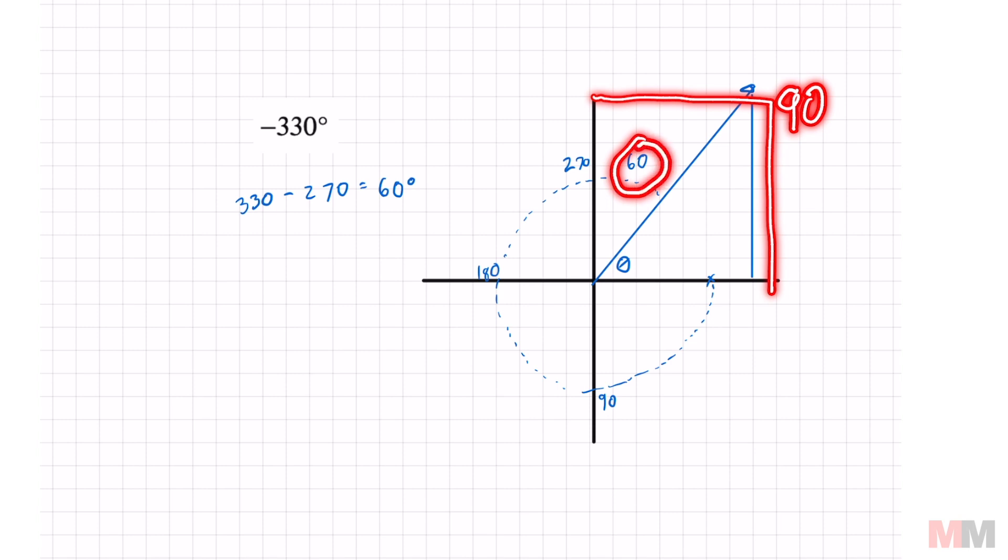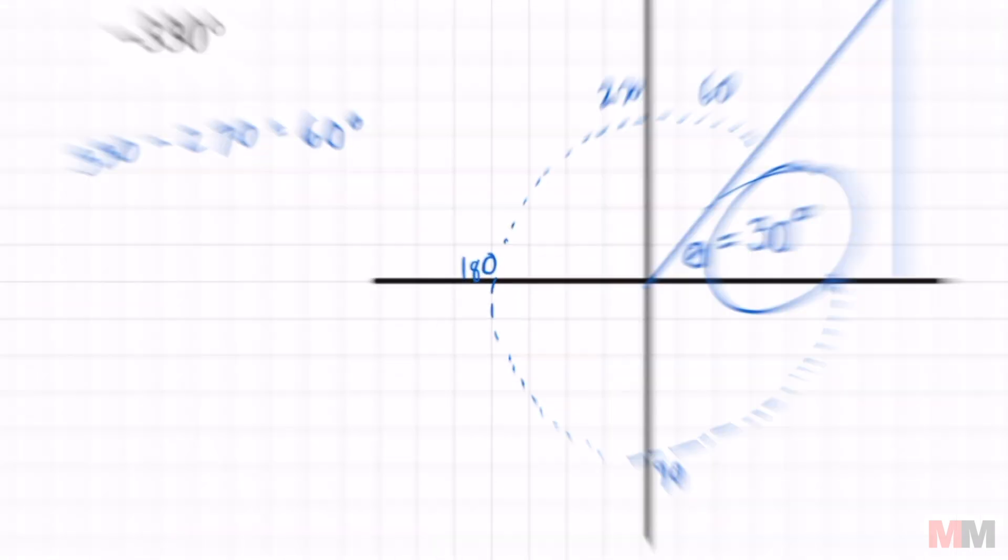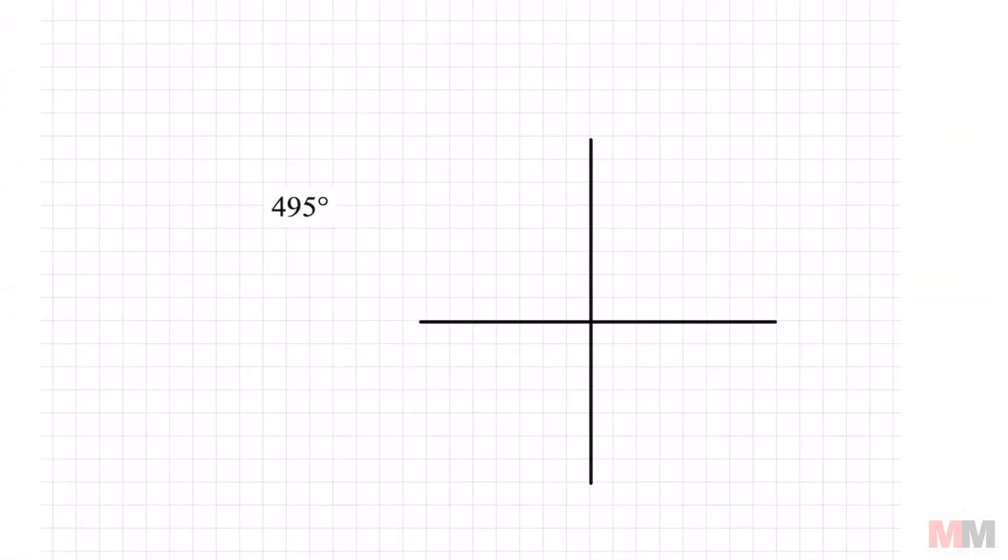If I take away 60 from 90, then I will get my reference angle, which is 30 degrees. Final answer. And hopefully you'll understand it after this last one.